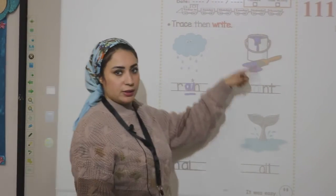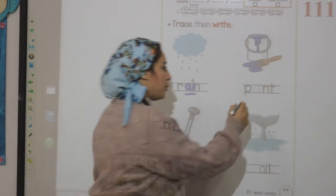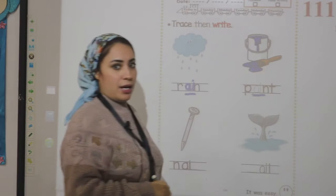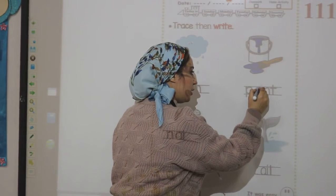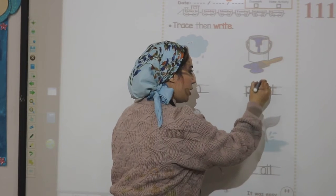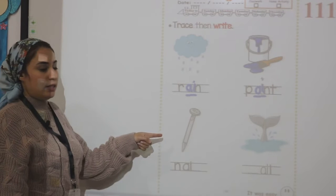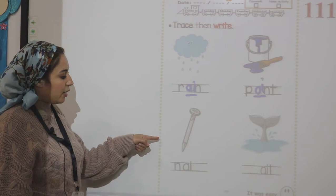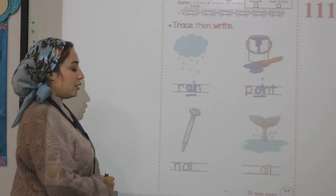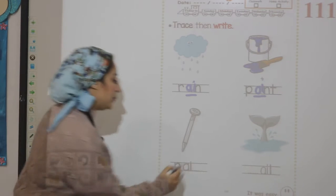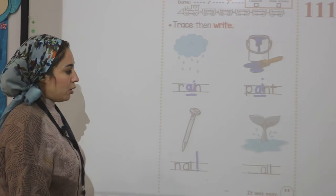Look at this picture. What is this? Paint. What is the middle sound here? A. Semi-circle up and down, down stick and dot. What is this? Nail. So what is the last sound here? Nail — L. Down stick.